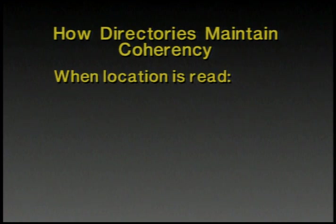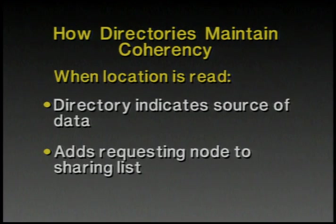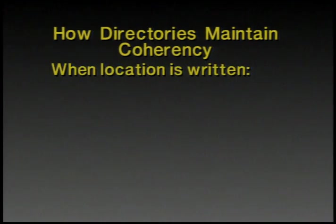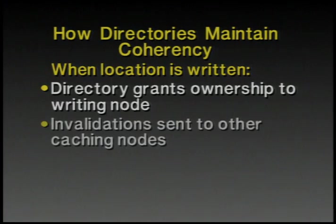How do directories maintain coherency? When a location is read, the directory is updated to indicate that the processor has a copy of that cache line — basically tracking the readers. When a location is written, the directory does two things: first, it grants ownership to the writer, determining which process gets priority; then, using the presence bits, it causes the other copies to be invalidated and eliminated from the cache.